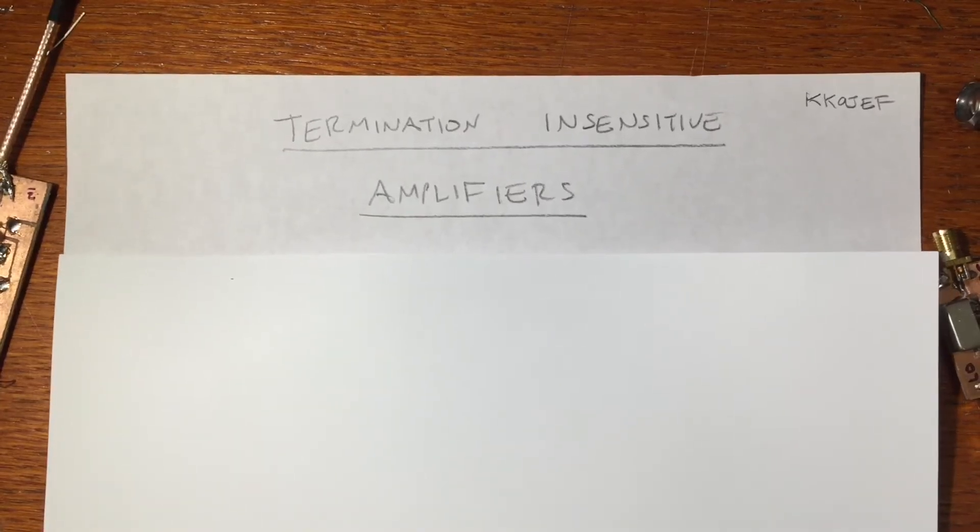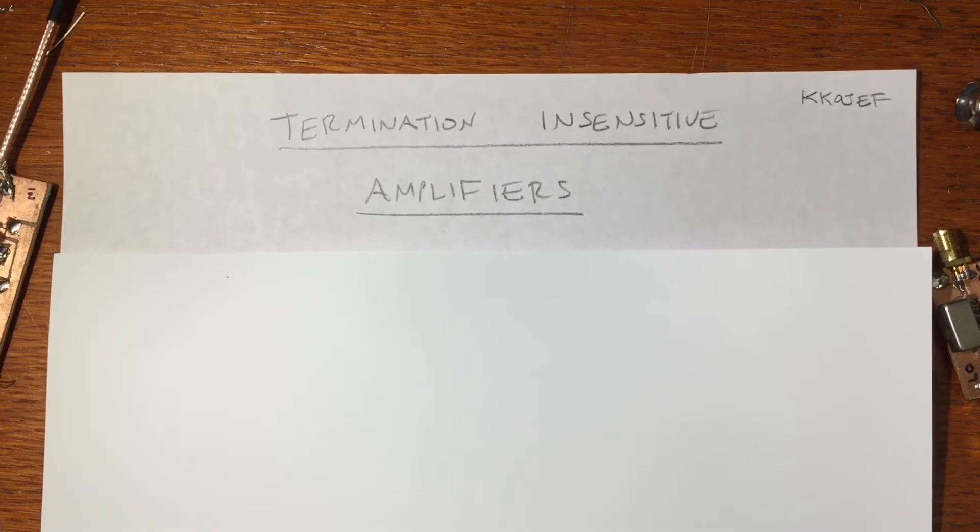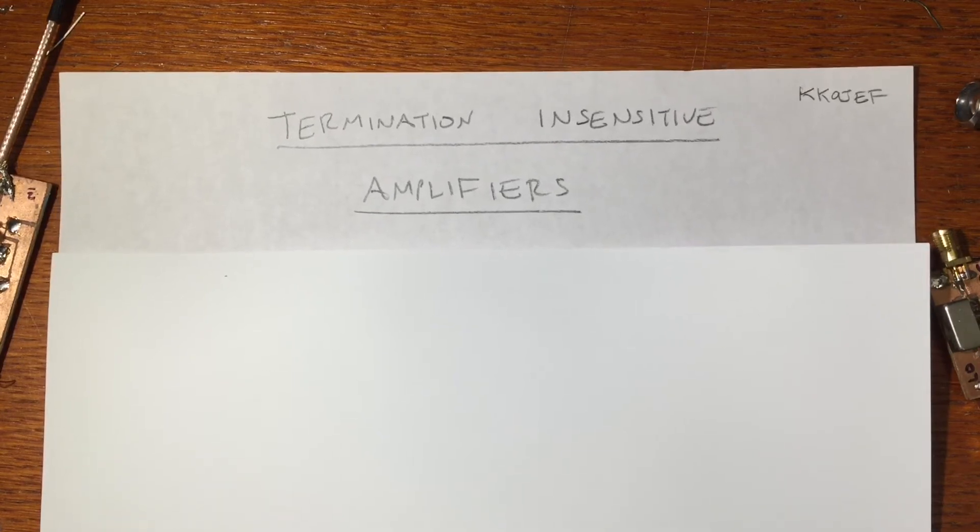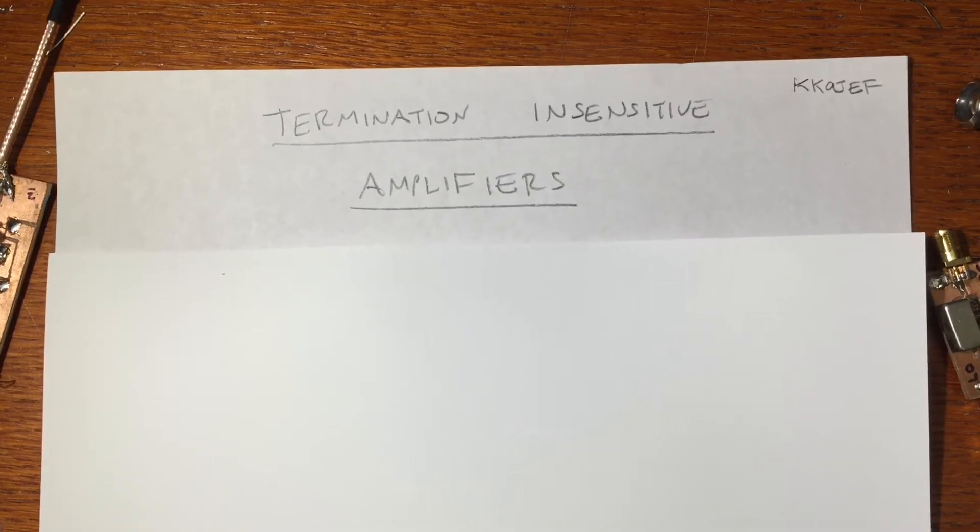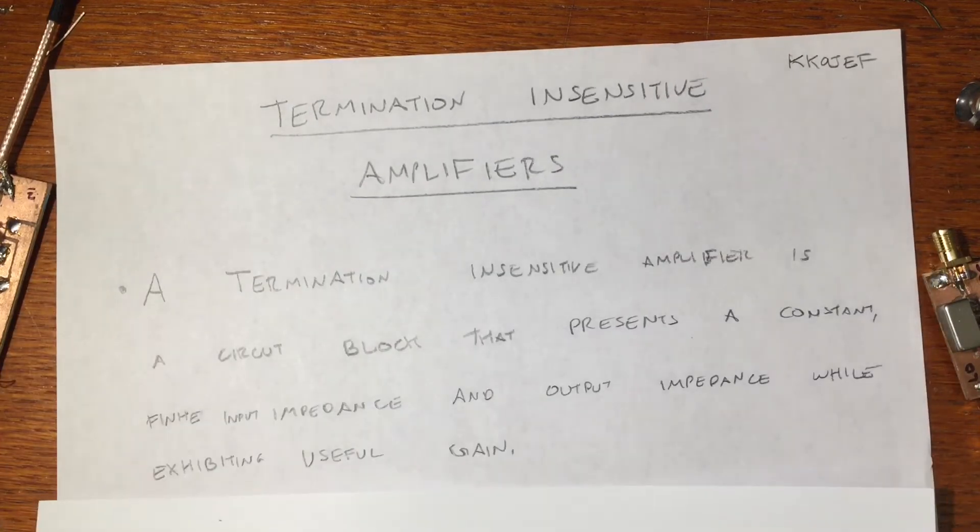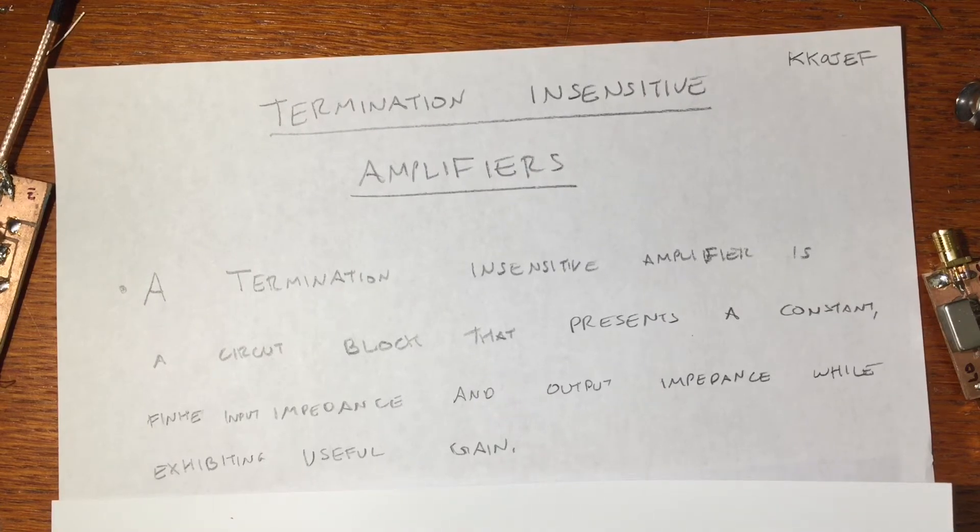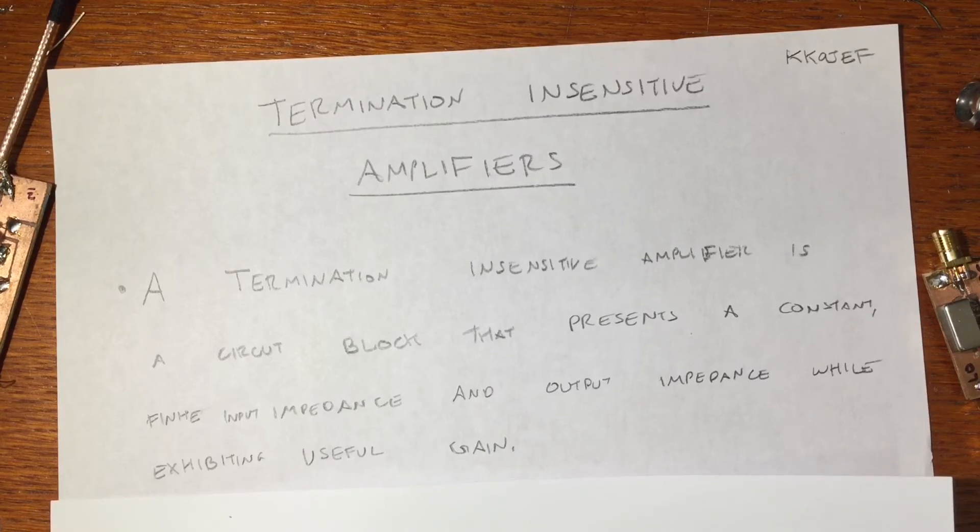Hey, this is Jeff, and today I want to take a quick look at termination-insensitive amplifiers in the context of RF circuits. So what is a termination-insensitive amplifier? A termination-insensitive amplifier is simply a circuit block, an amplifier block, that presents a constant finite input impedance and a constant output impedance, which don't necessarily have to be the same, while exhibiting some useful gain across the amplifier.